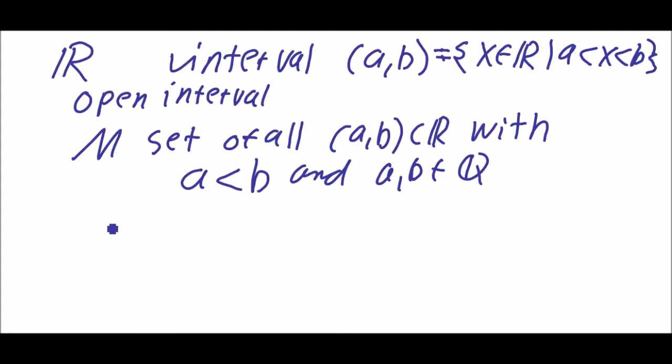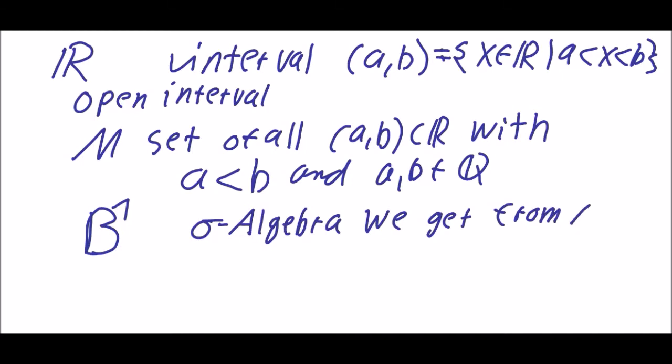And we denote it with B1. So B1 is the sigma algebra that we get from M. So M takes the role of omega here and B1 takes the role of F like in the other case. So B1 is the sigma algebra for M, we can say, or a certain sigma algebra.